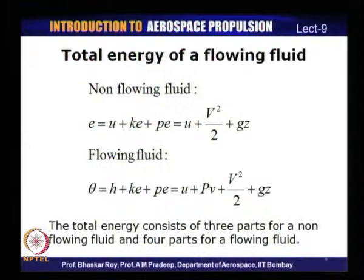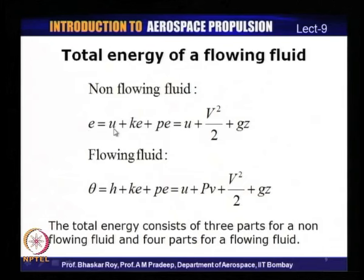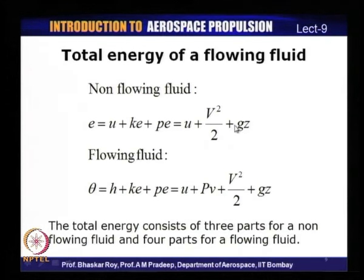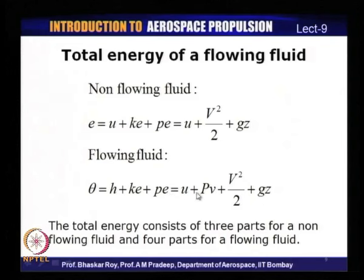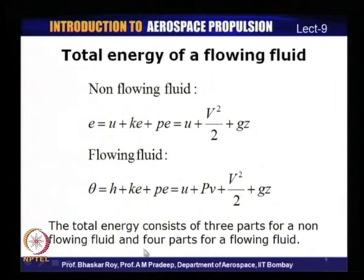In equation form: total energy for a non-flowing fluid is E equals U plus KE plus PE, which equals U plus V²/2 plus gZ (kinetic and potential energy per unit mass). For a flowing fluid, theta equals H plus KE plus PE, which equals U plus PV plus V²/2 plus gZ. For a non-flowing fluid there are three energy components; for a flowing fluid there are four components — that is the basic difference.